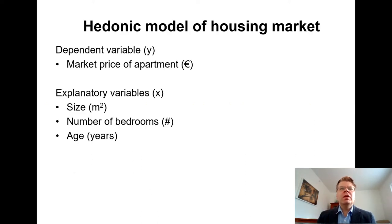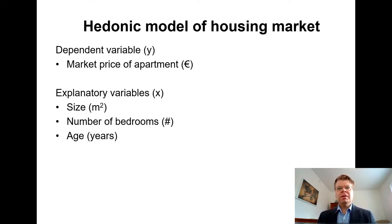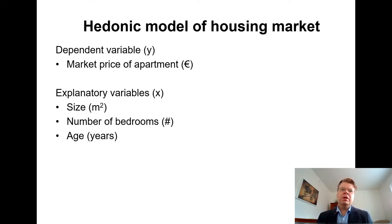To keep a close connection to our empirical example and to gain some practical insight, let's consider again this hedonic model of the housing market in Tapiola, Espoo. We want to estimate the impact of some explanatory variables x on the market price of an apartment, which is the dependent variable y. As predictors, I have now included three variables: size of apartment in square meters, number of bedrooms, and the age of apartments.